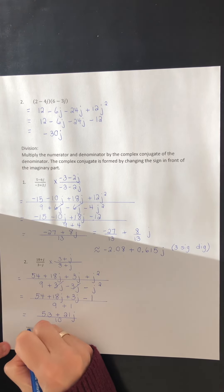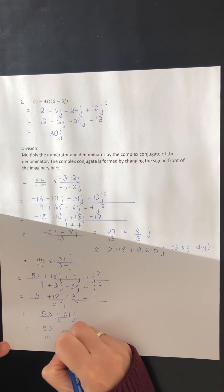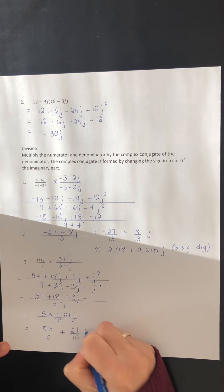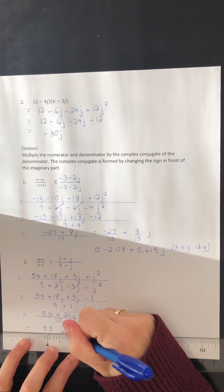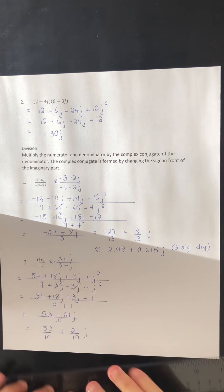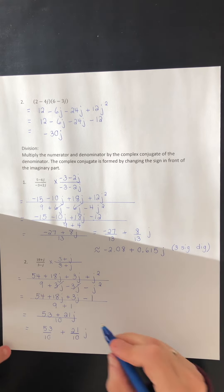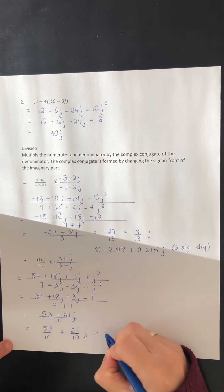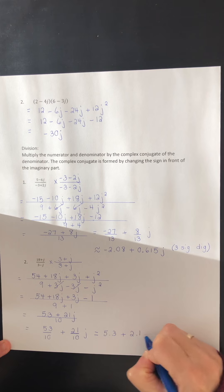We split that so we can clearly compare the real part and the imaginary part. Since we are dividing by 10, these are exact answers: 53 over 10 plus 21 over 10 times j, which equals 5.3 plus 2.1j.